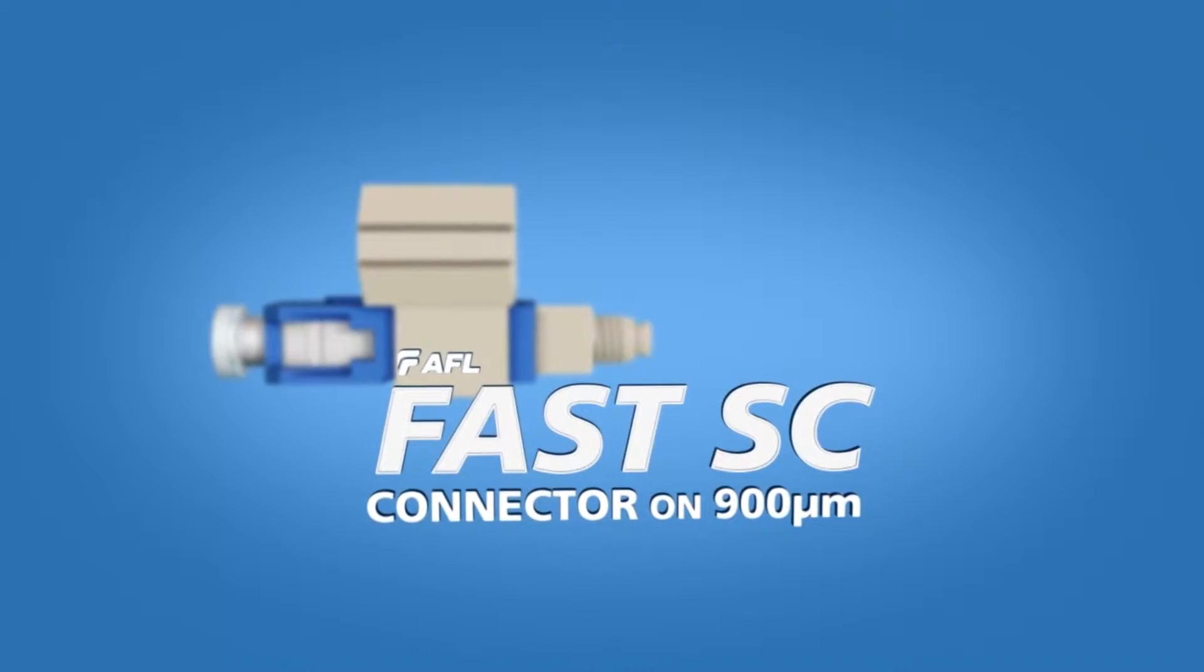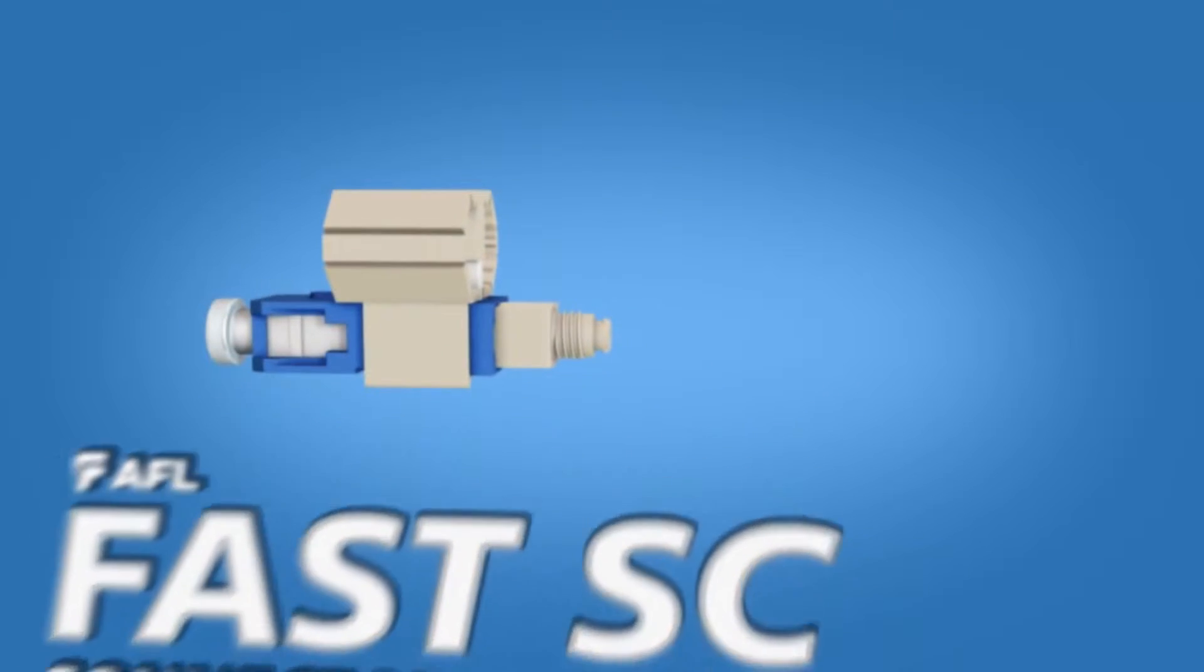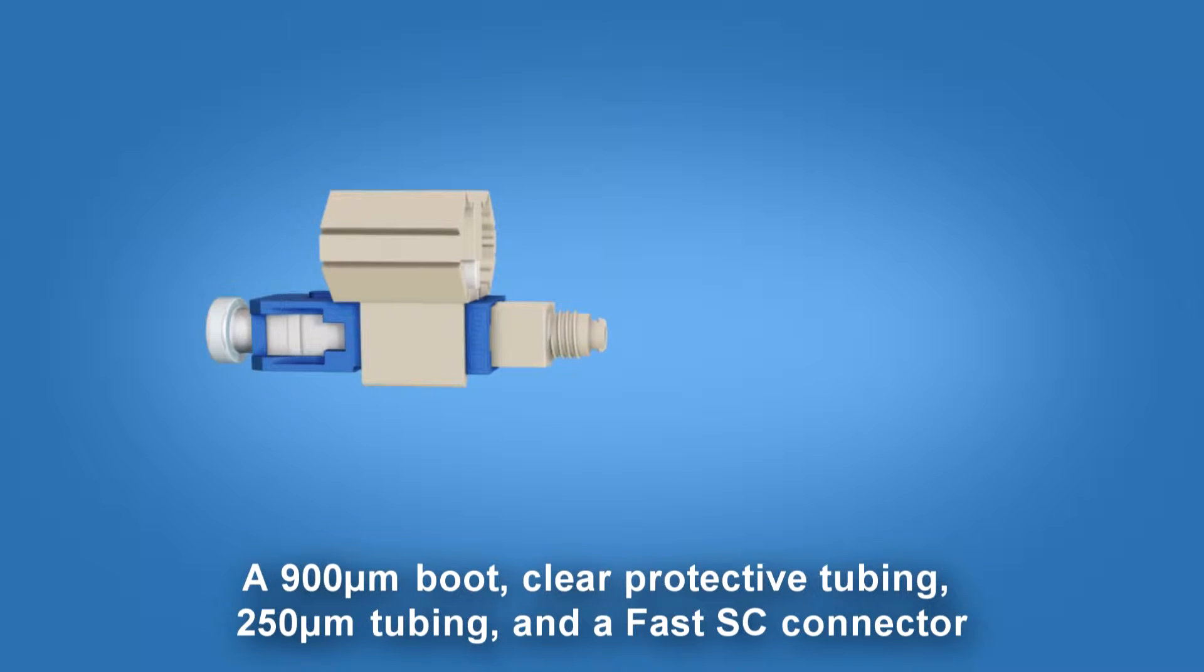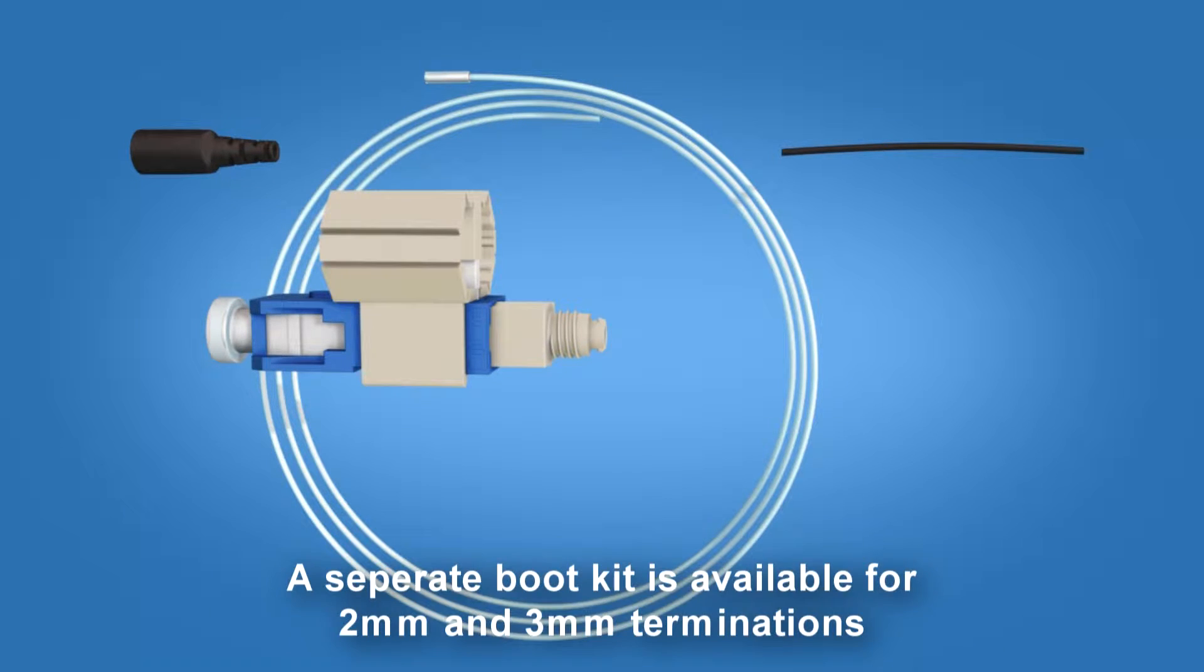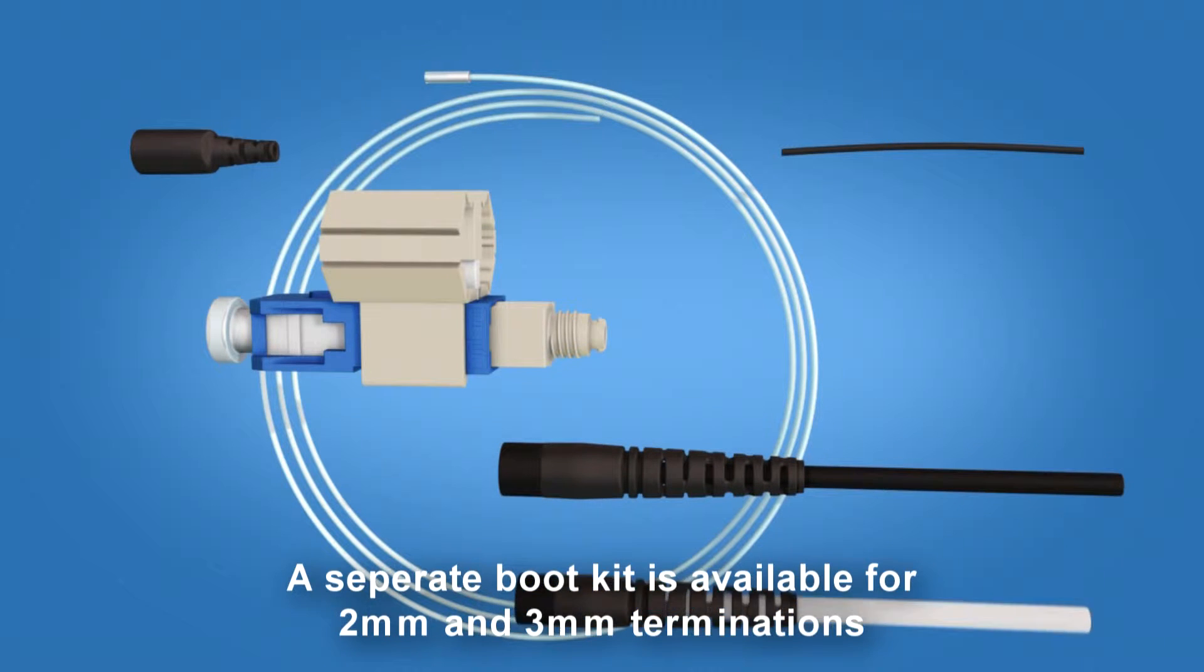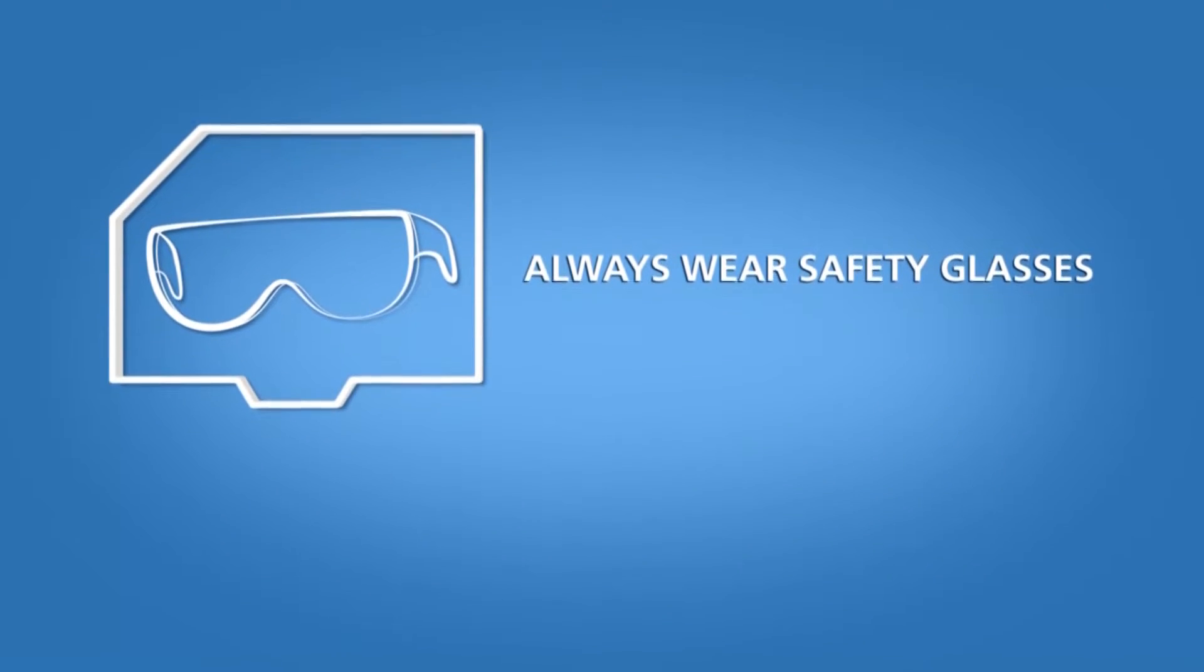The Fast SC connector kit contains a 900 micron boot, clear protective tubing, 250 micron tubing, and a Fast SC connector. A separate boot kit is available for two and three millimeter terminations. Always wear safety glasses.